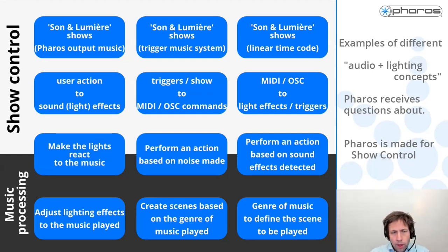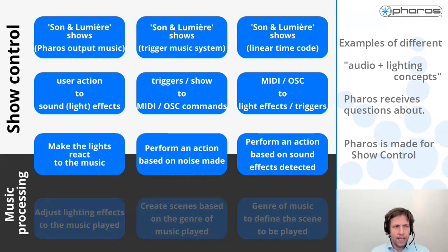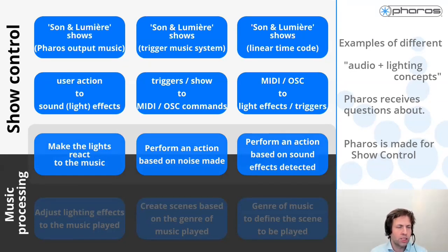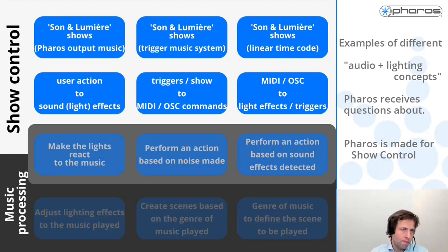At the bottom end, we have more items that require music processing. Sometimes people ask if we can play another show based on the type of music played - they actually want to take a piece of music, do processing on it, determine if it's electronic dance music or rock or classical music, and based on that, play back a show. Pharos is all about show control, and everything related to music processing is not something we can do ourselves. We can integrate with other systems that can do it. Some parts are exactly at the edge - a gray area. Yes, we can do some parts of this, but if it's meeting your project requirements, that's difficult for us to judge. I will give examples of the things we can do.